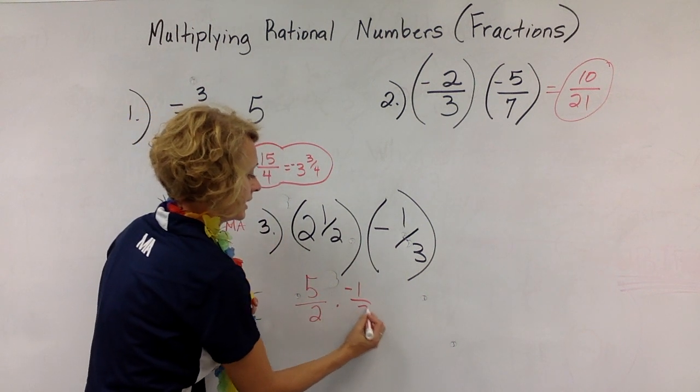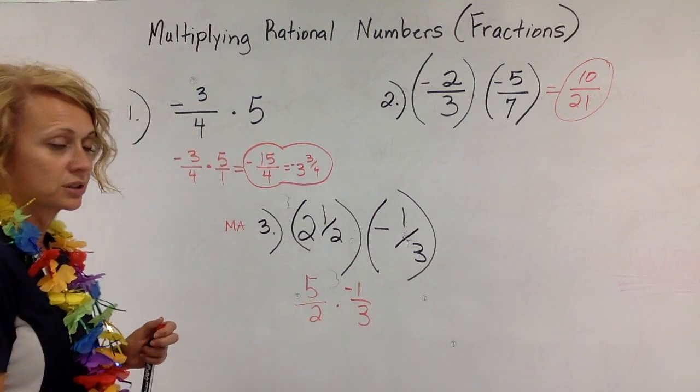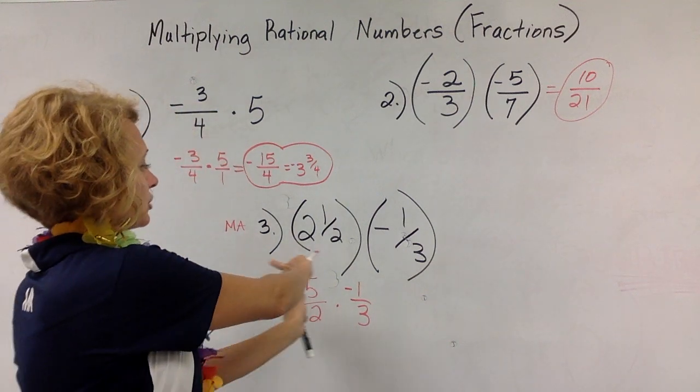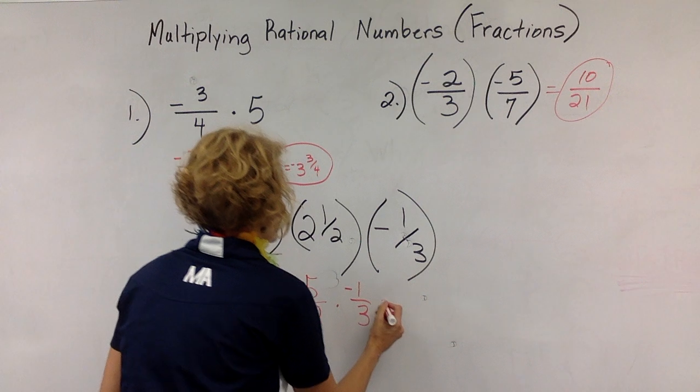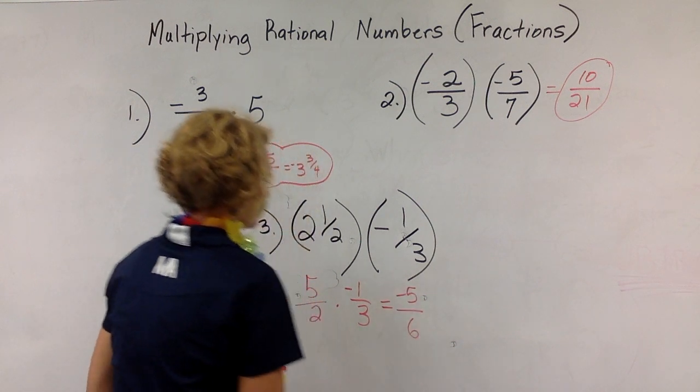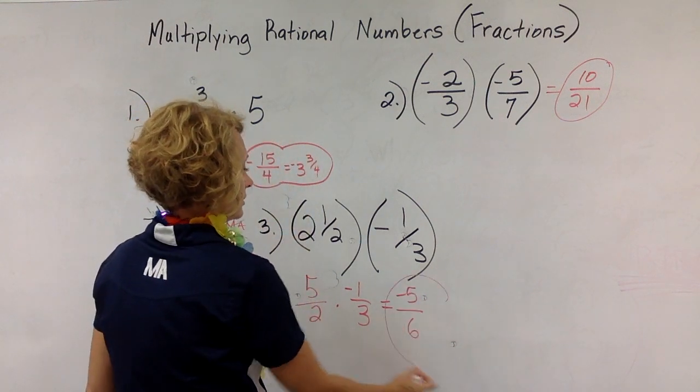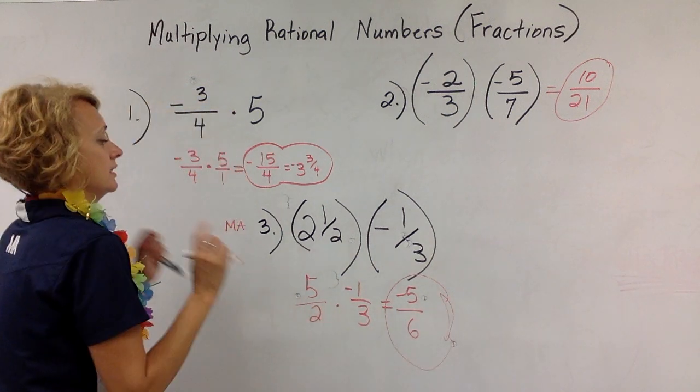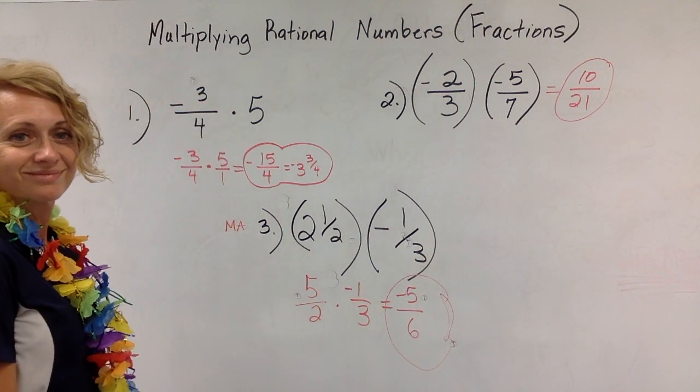I'm going to multiply that by negative 1 third. Let's bring my fraction down. Multiplying fractions you go straight across. So that's going to give us negative 5 over 6. That cannot be simplified. That's my final answer. That's it.